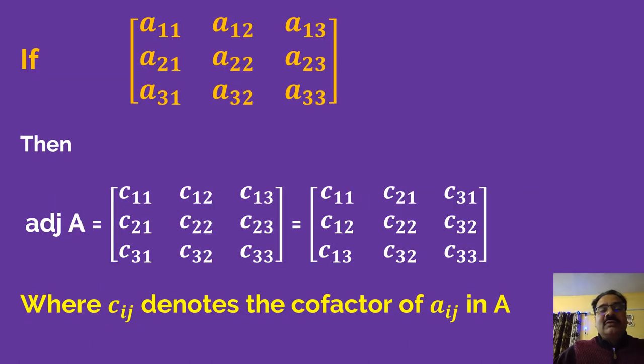Now if A is a 3 cross 3 matrix, you can see that A11, A12, A13, A21, A22, A23, A31, A32, and A33 are the elements. Then you can write the adjoint of A. Adjoint of A means the cofactor, so we will find out the minors.